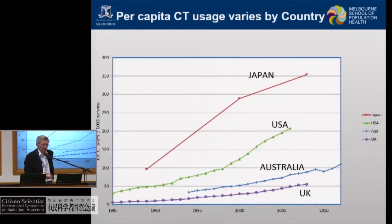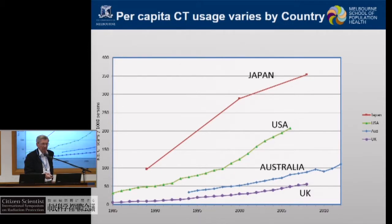It is important to recognise that Japan has three reasons for being interested in low-dose radiation. The first is the long-term effects of the atomic bombs, which has given us very good data for understanding radiation effects generally. The second is that Japan is apparently the highest user of diagnostic CT scans in the world on a per capita basis — higher than the USA, Australia, and the UK. And the major focus of this meeting is low-dose radiation from Fukushima and its effects on those exposed.